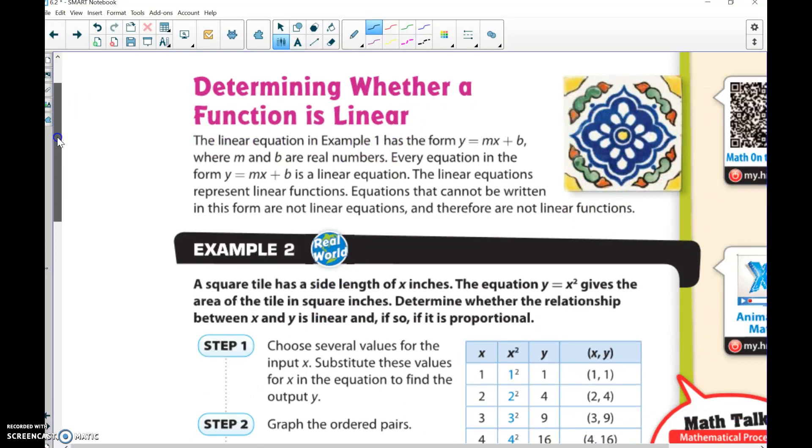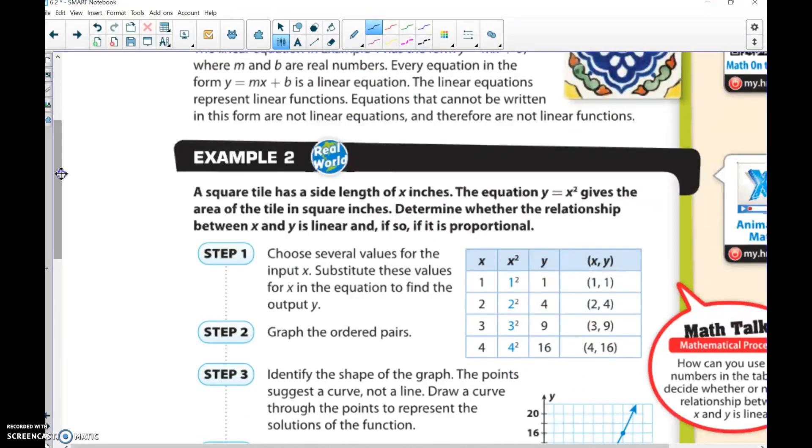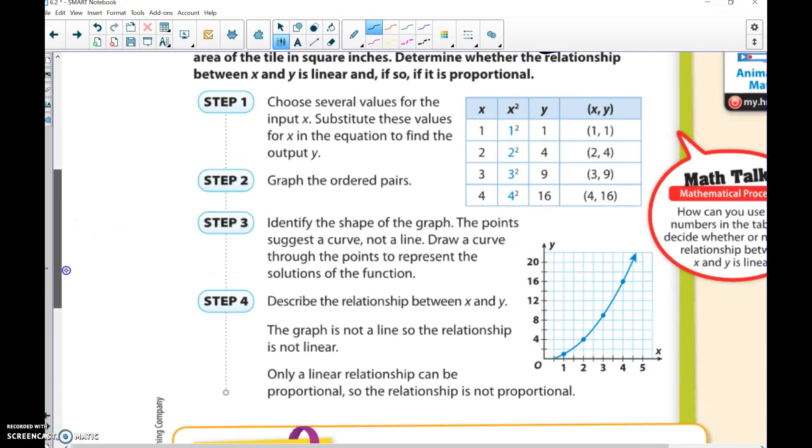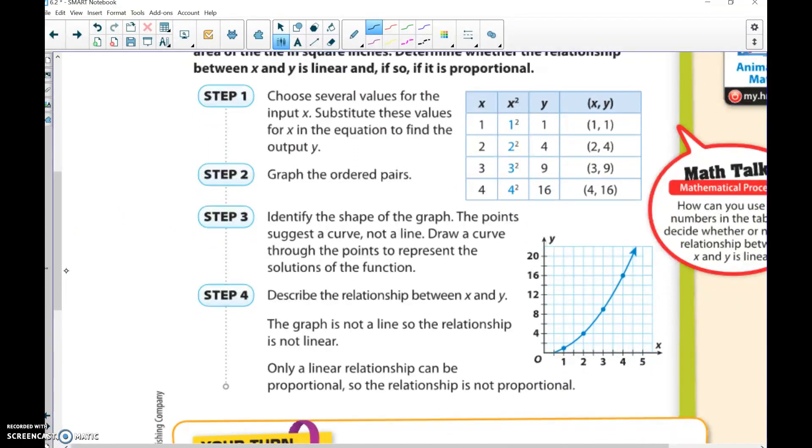This one's talking about whether or not it's linear. We see y = x², and right away I see that x squared, and I know it's not going to be linear.